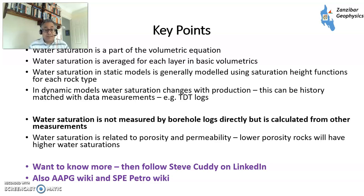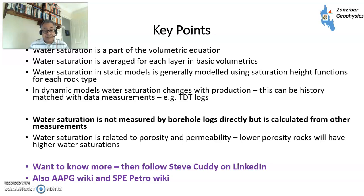Key points: saturation is a key part of the volumetric equation, but a somewhat forgotten one. In basic volumetrics you average it per layer. In static models you use saturation height functions for each rock type. In dynamic models, saturation changes with production and can be tracked via history matching and data measurements such as TDT logs and new infill wells. The absolute key point is that saturation is not measured directly by borehole logs - it is calculated from other measurements - so there is quite a lot of ambiguity. It is also related to porosity and permeability, with lower porosity rocks having higher water saturations.